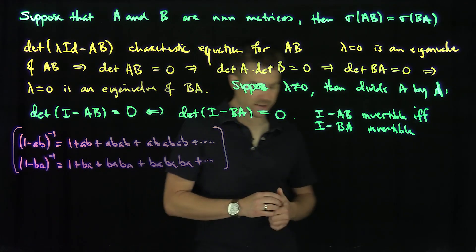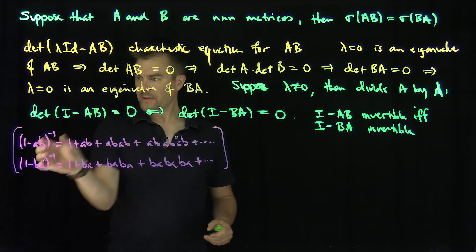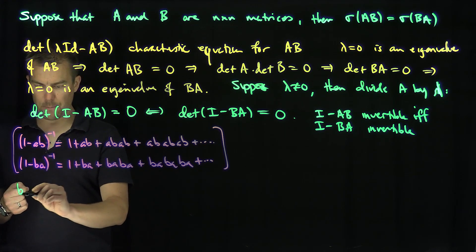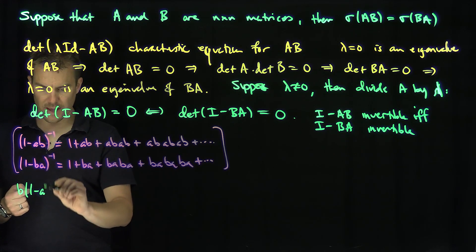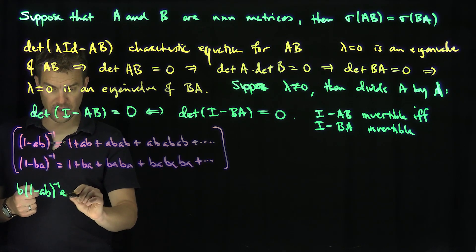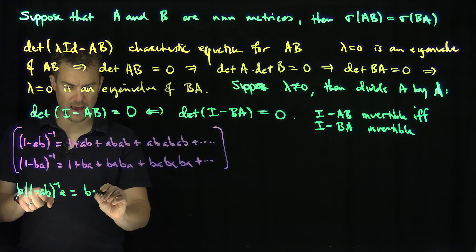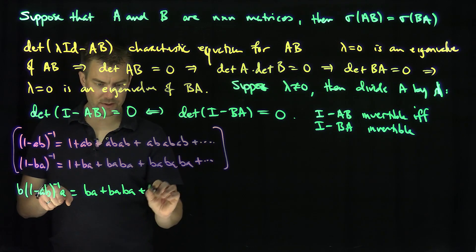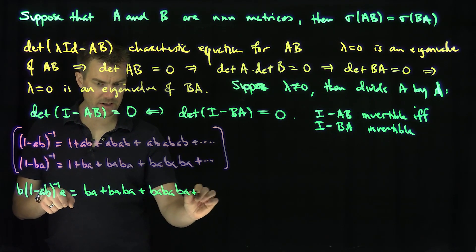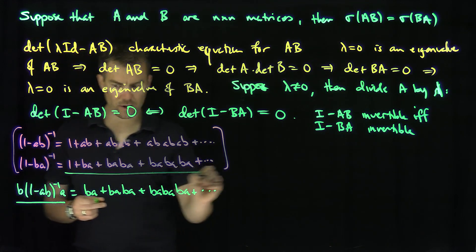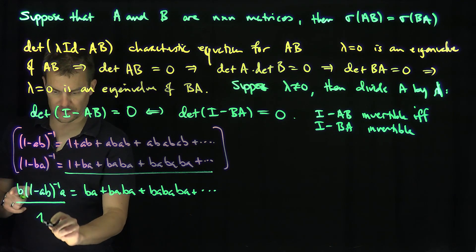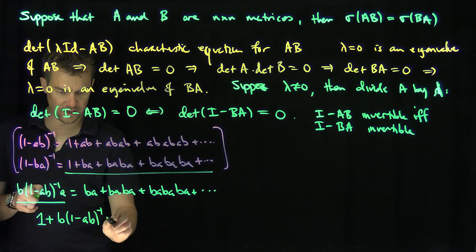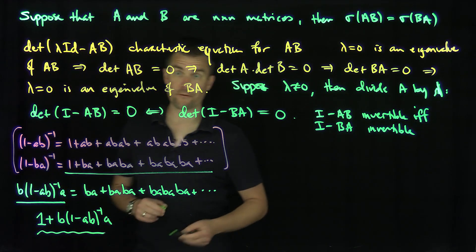The key idea is that if this inverse of identity minus AB exists, we can relate the two series. If we multiply by B, then hit the inverse with A, we get terms like BA, BABA, and so on — very close to the BA series, except there's an extra one. So a good candidate for the inverse of identity minus BA is the expression: I plus B times (I minus AB)^{-1} times A.